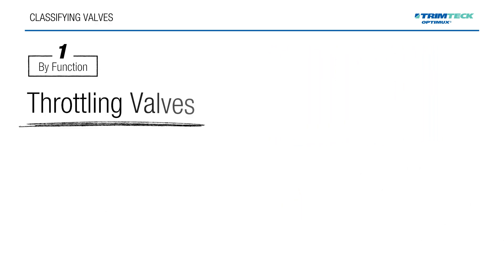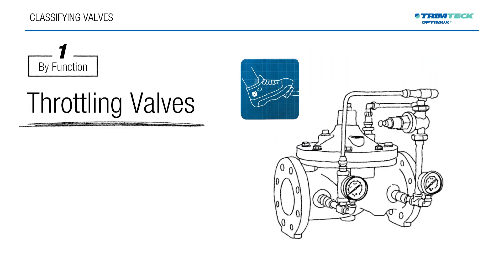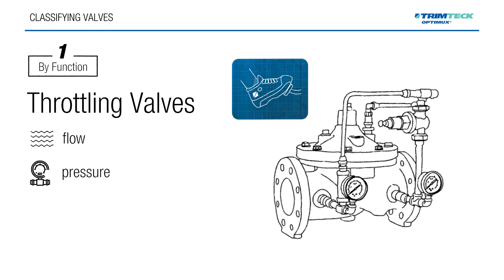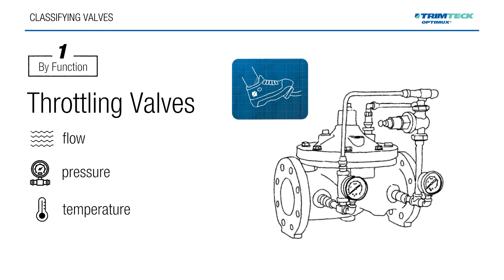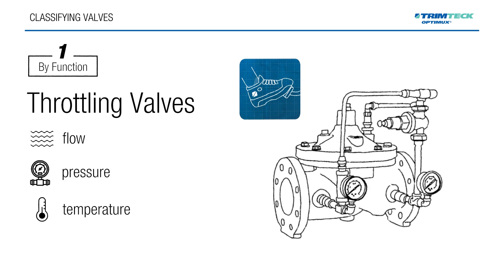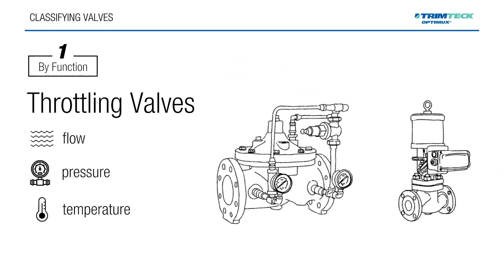Throttling valves regulate flow, pressure, or temperature. Unlike on-off valves, they can adjust to any position within their stroke. Control valves and pressure regulators fall into this category.